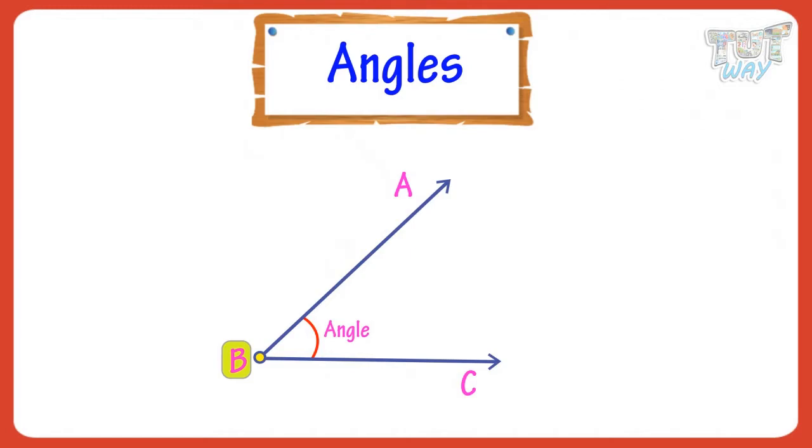So kids, an angle is a shape formed by two straight lines diverging from a common point. Here, B is the vertex of the angle. AB and BC are legs of the angle.